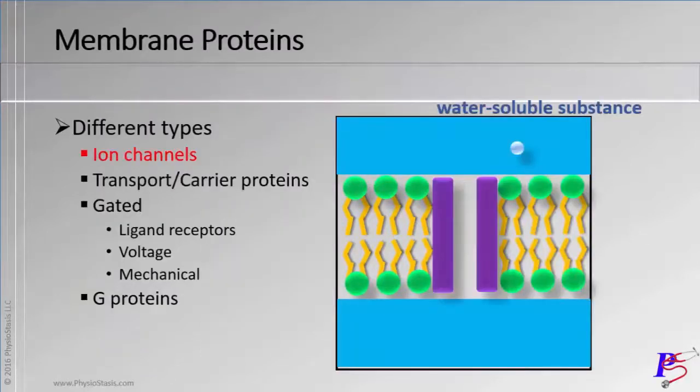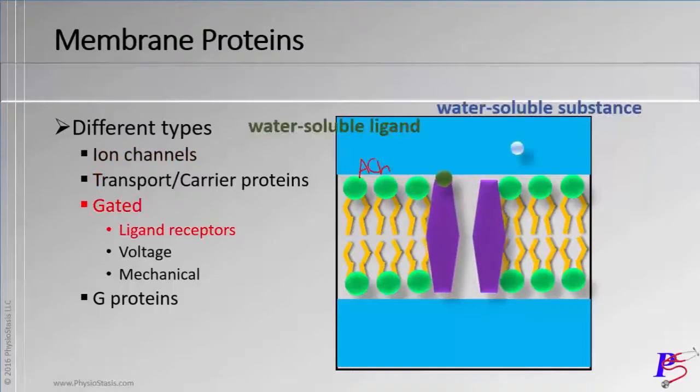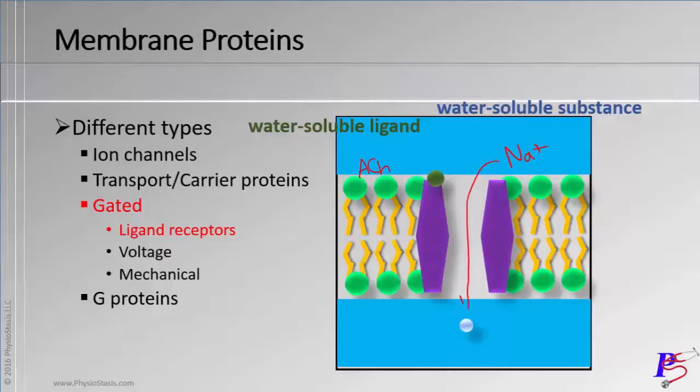You have your ion channels, so they're basically like a simple bridge. Here comes your water-soluble substance and it simply makes it through to the other side. It comes, binds to the gate like a key, opens it, and for example, that blue solute there could have been sodium rushing through.